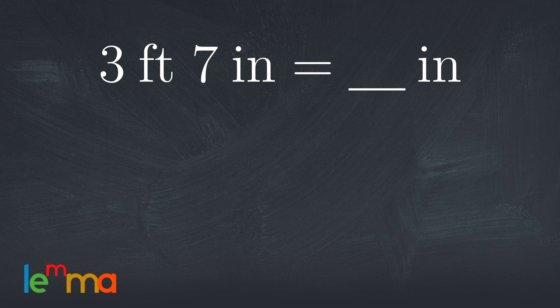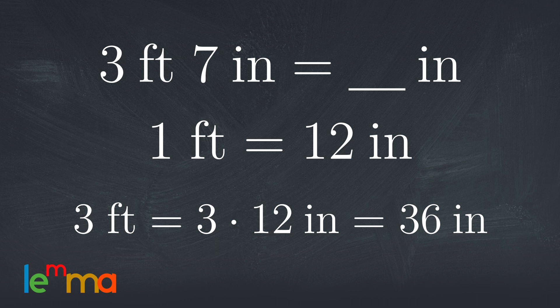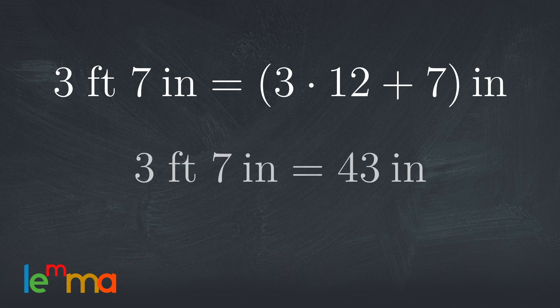Let's convert 3 feet and 7 inches to inches. A foot is 12 inches, so 3 feet is 3 times 12, or 36 inches. Therefore, 3 feet and 7 inches is 3 times 12 plus 7, or 43 inches. And the problem is solved.